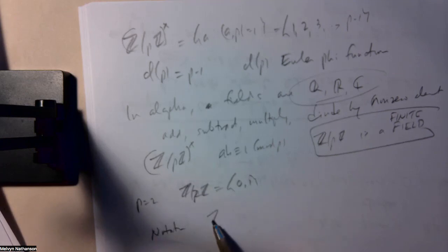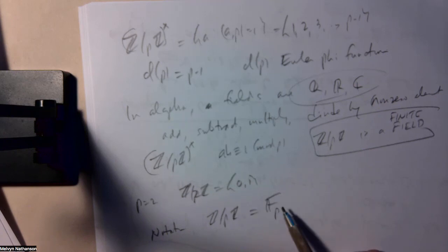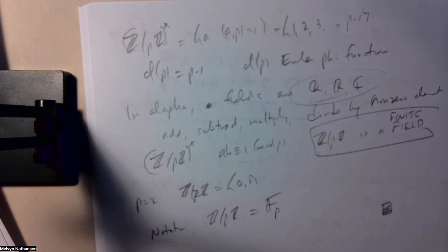And notation, sometimes for Z mod pZ, one writes F_p to mean the field with p elements. So that's section 1.4. But there is a lot of meat in this section.